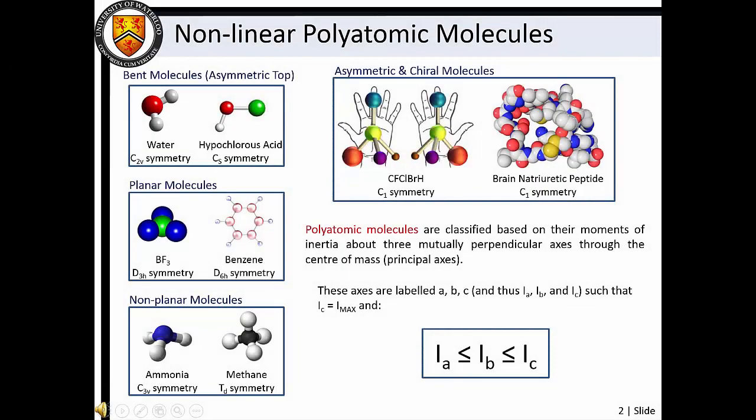There are a number of classification schemes for molecules. We will see in Masterclass 9 that symmetry classification based on group theory is perhaps the most useful method. Here, however, we will broadly classify molecules based on their moments of inertia about three perpendicular axes passing through the molecular center of mass. These axes are labeled the A, B, and C axes, and they are defined such that the moment of inertia about the C axis is the largest of the three axial moments of inertia.